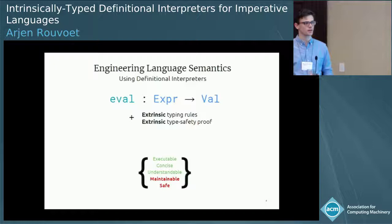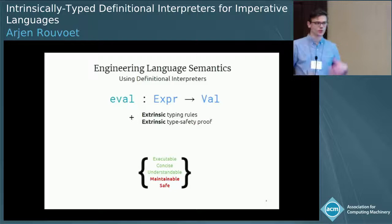Because you have this extrinsic proof that will develop alongside with your specification. Luckily, the guys doing dependent types know that there is an alternative way to get safety in an intrinsic way.